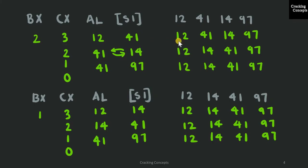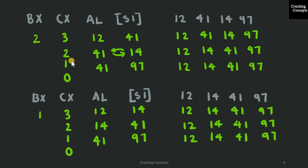The same process repeats. Comparing 12 and 41: 12 is lesser, no swapping; LOOP decrements CX to 2. Taking the next two numbers, 41 and 14: 41 is greater, so we swap, giving 12, 14, 41, and 97. CX is decremented to 1. The next two numbers are 41 and 97 — since 41 is lesser, no swapping is needed. CX is now 0, so this set of iterations is over.